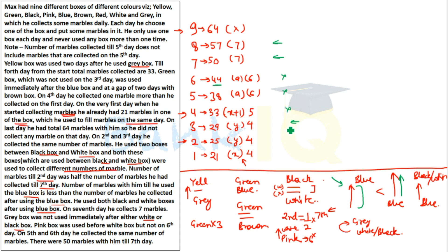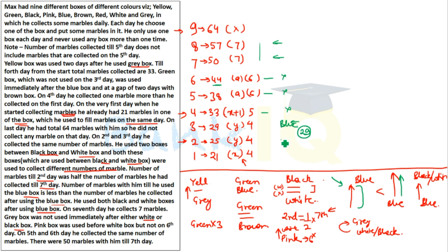Checking further: if blue is used on day 3, then before blue we have 29 marbles collected. After blue: checking days 4 onwards, the total is 14 + 21 + 25 + 31 = more than 29, so blue can be used on day 3. Similarly, blue can also be used on day 4 or day 5. So we have three possibilities for blue to check.